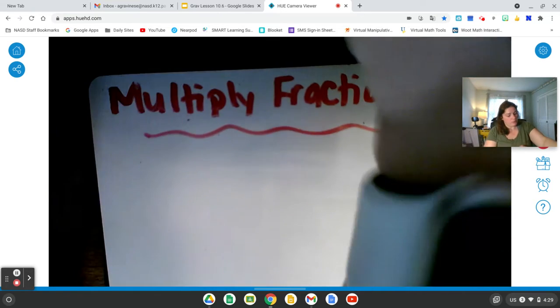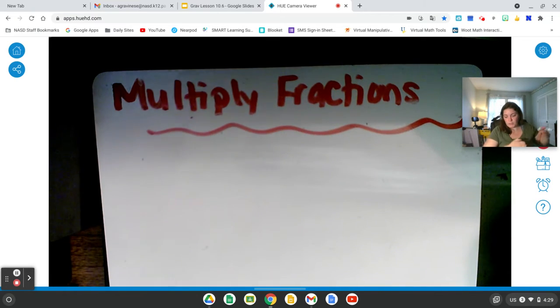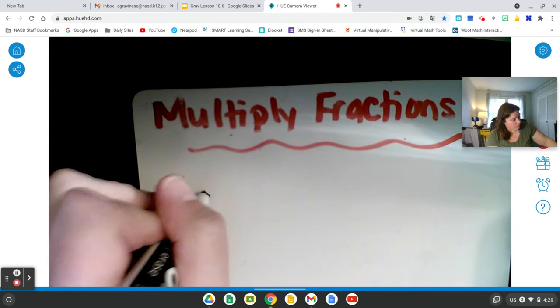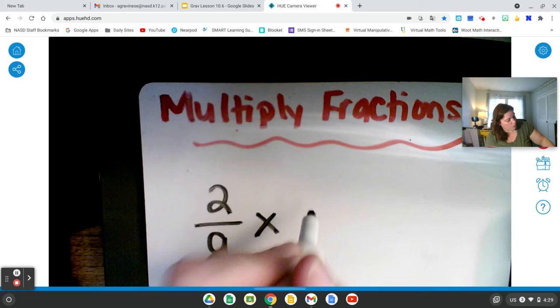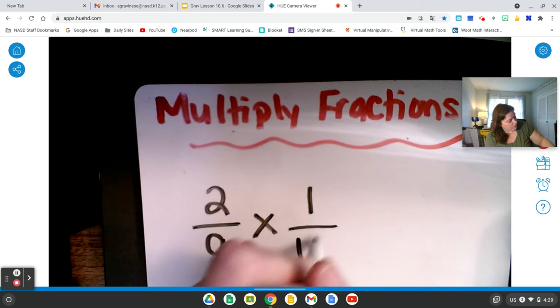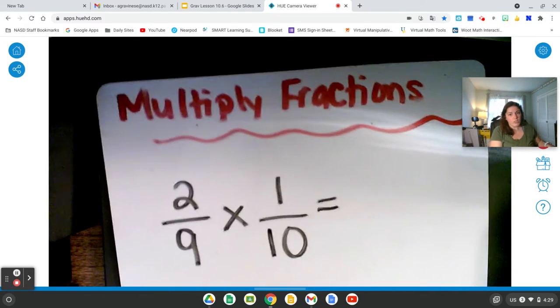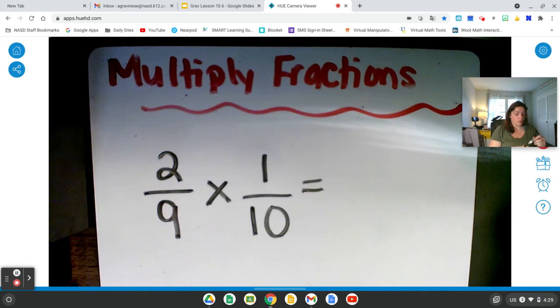Let's take a look at another example. So for this example, we are going to take 2/9 times 1/10. And I'm going to show you how to do this problem two different ways. The first way is going to just multiply and then simplify your answer. The second way is using a little trick where you simplify the problem and then you get your answer.